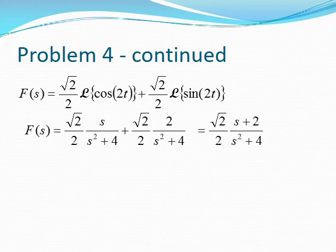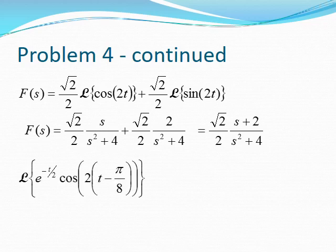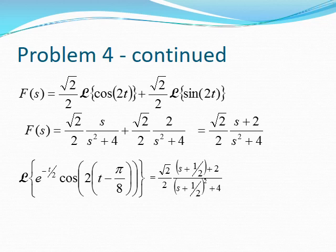After grouping terms, we have F(s). Now we apply the s-axis translation by replacing every s with s minus a, which here is s minus one-half, to obtain the Laplace transform of the full function. The factor of two and the one-half are grouped together in the final result.